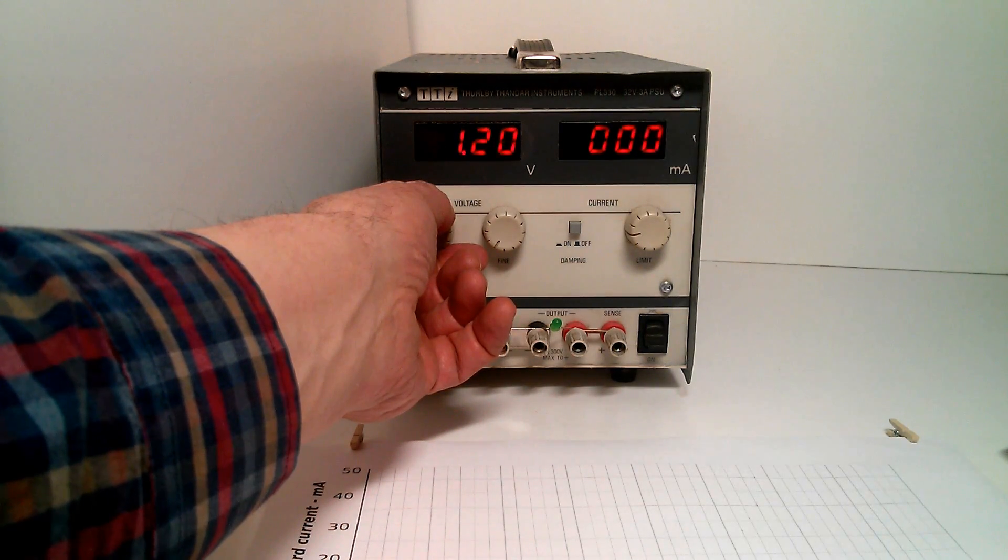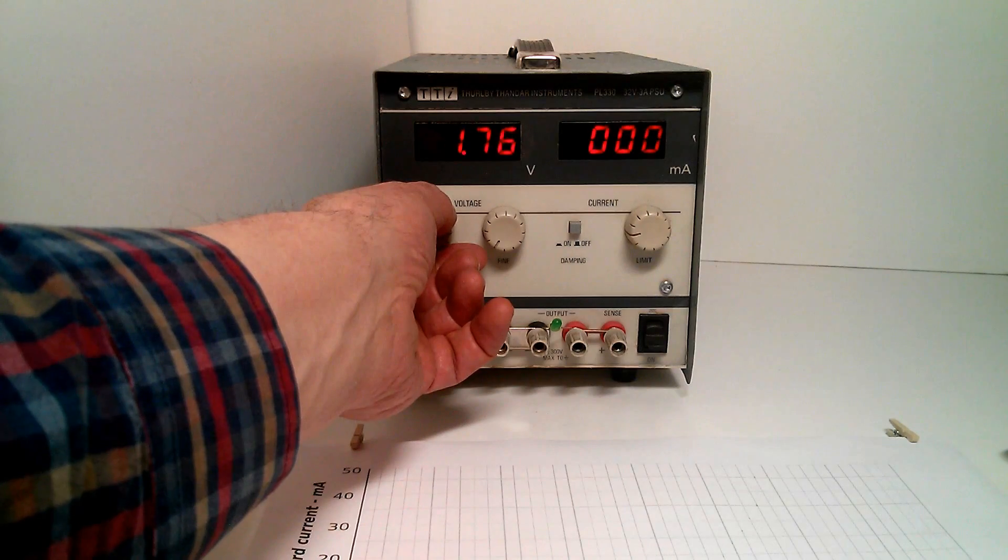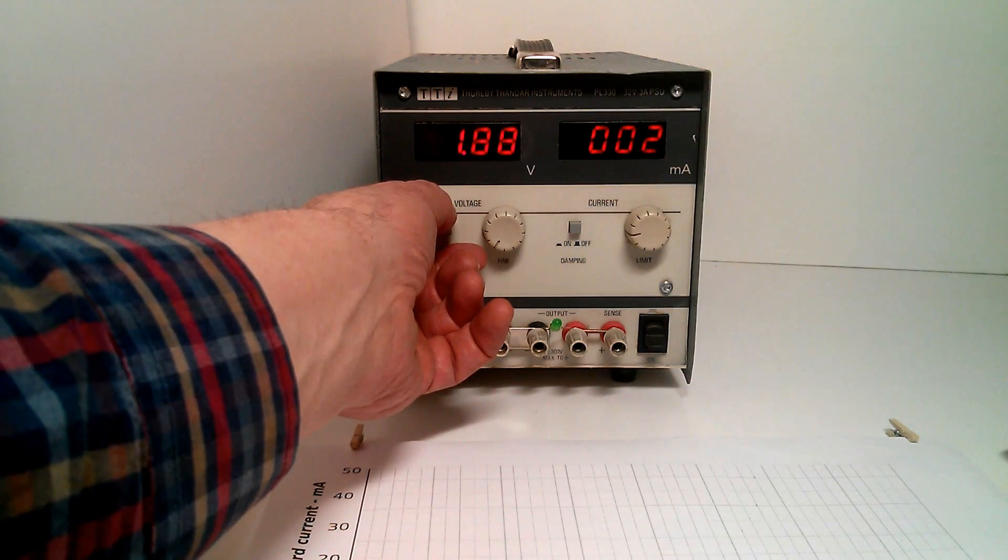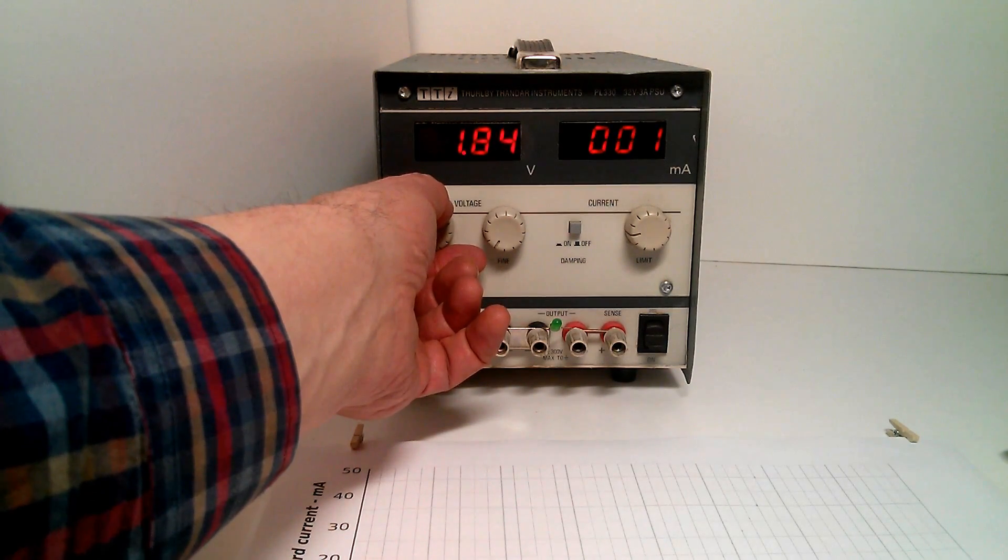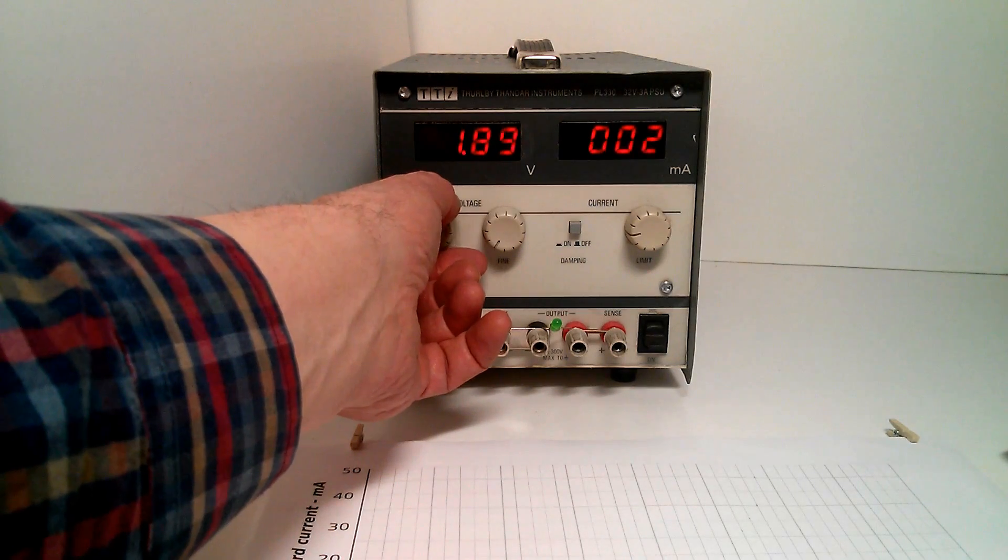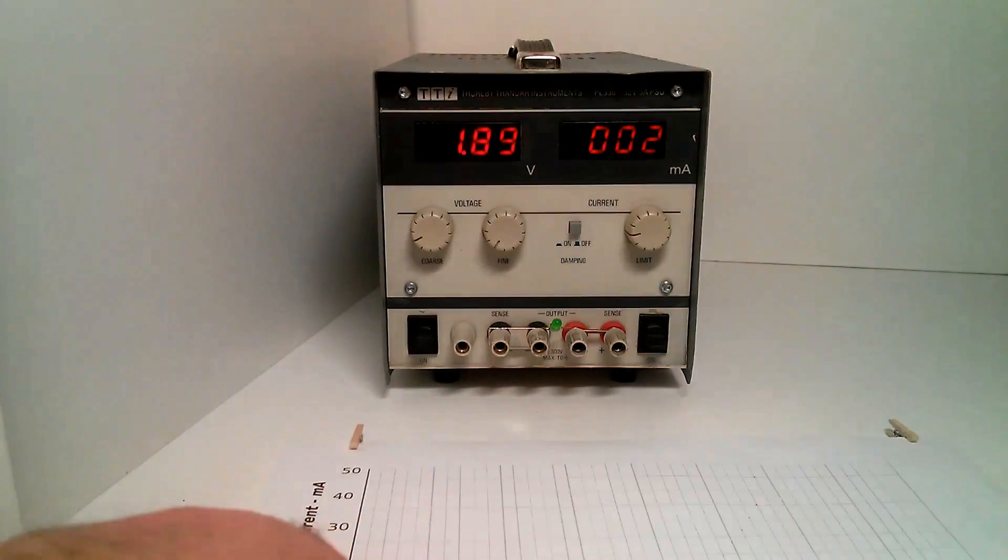Keep going at 1.3, 1.4, 1.5, 1.6, 1.7. And at, let's make that 1.9 volts, we get 2 milliamps flowing.